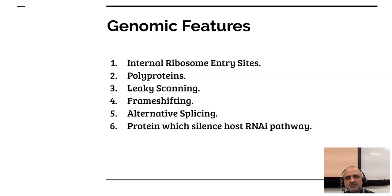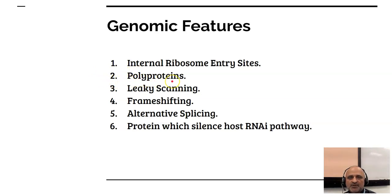Let us look at some genomic features. The first is the internal ribosome entry site, an element of RNA viruses located at the 5 prime end of plus single-stranded RNA viruses, which binds to the host ribosomal machinery and translates the messenger RNA. The second feature is the polyprotein — polyproteins are proteins produced as a single unit before they are cleaved by viral proteases. These proteases are encoded in the polyprotein itself, so the virus essentially synthesizes a large protein molecule which then cleaves itself into its integral components.